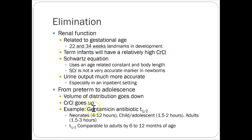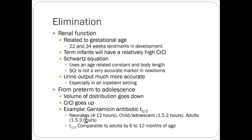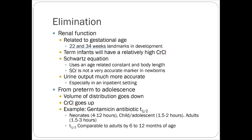Gentamicin is a purely renally eliminated medication, so it's a good marker. Neonates have a hugely variable gentamicin half-life — a 32-week premature infant will be around 12 hours, while one close to 40 weeks gestation will be closer to 4 hours. In childhood and adolescence, kidneys ramp up and half-life is much shorter. This really only starts to slow noticeably in elderly years for a healthy person.